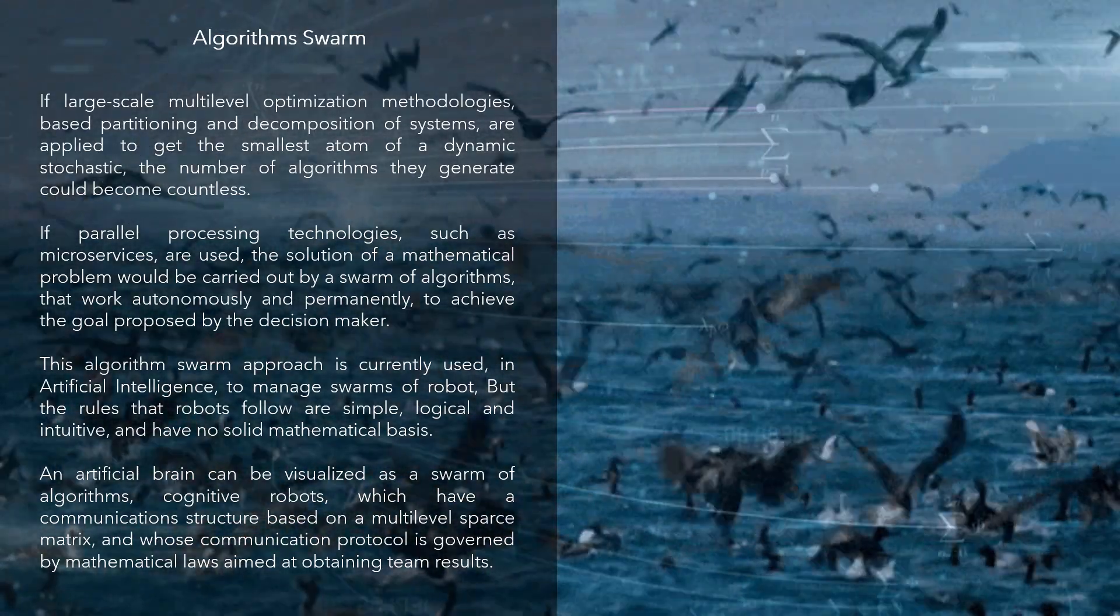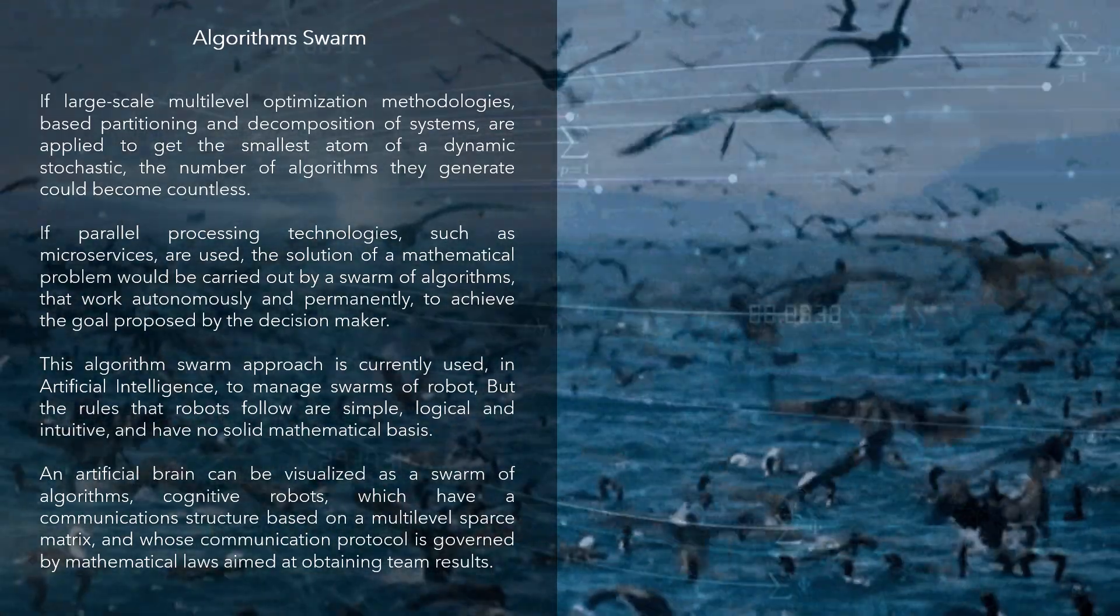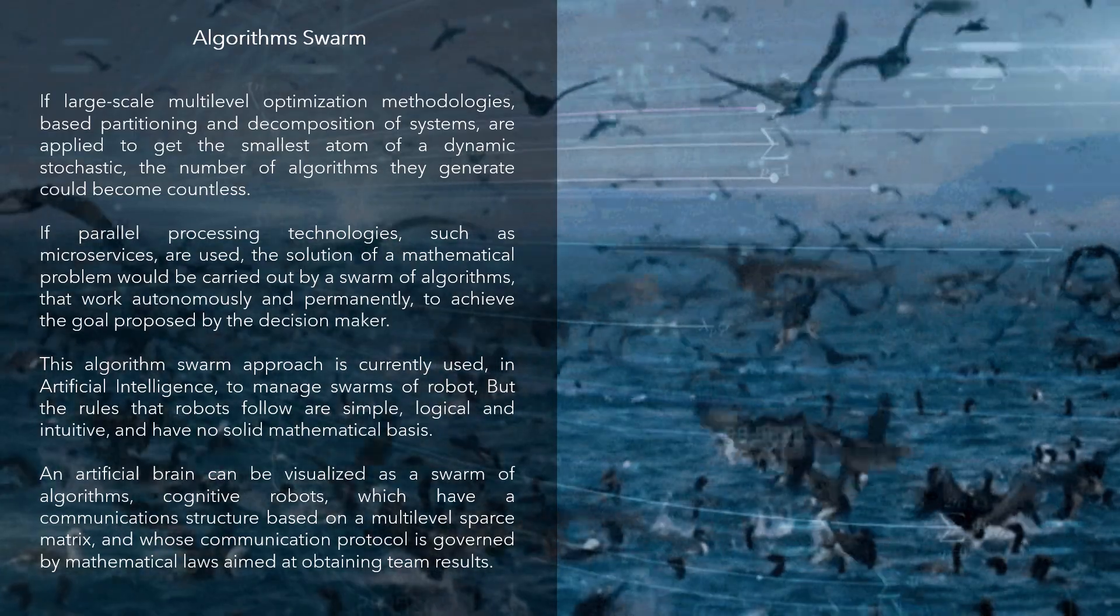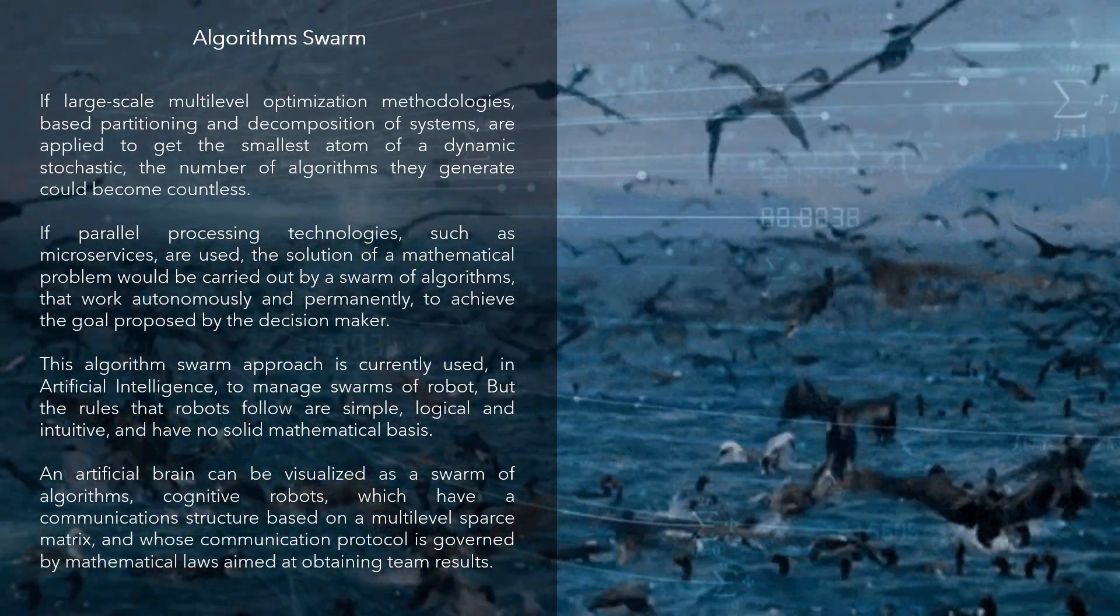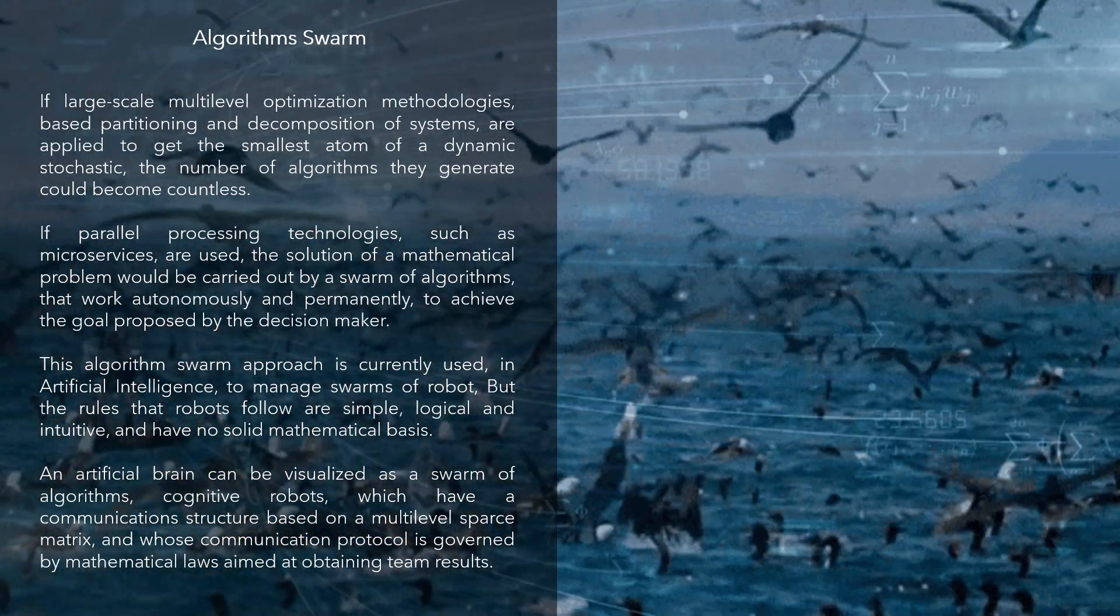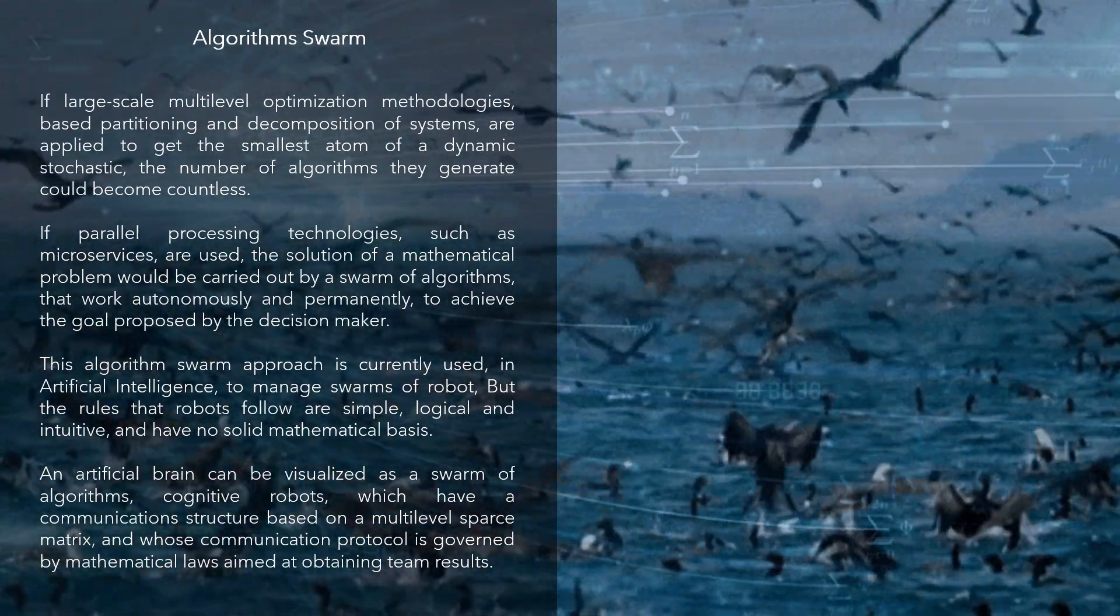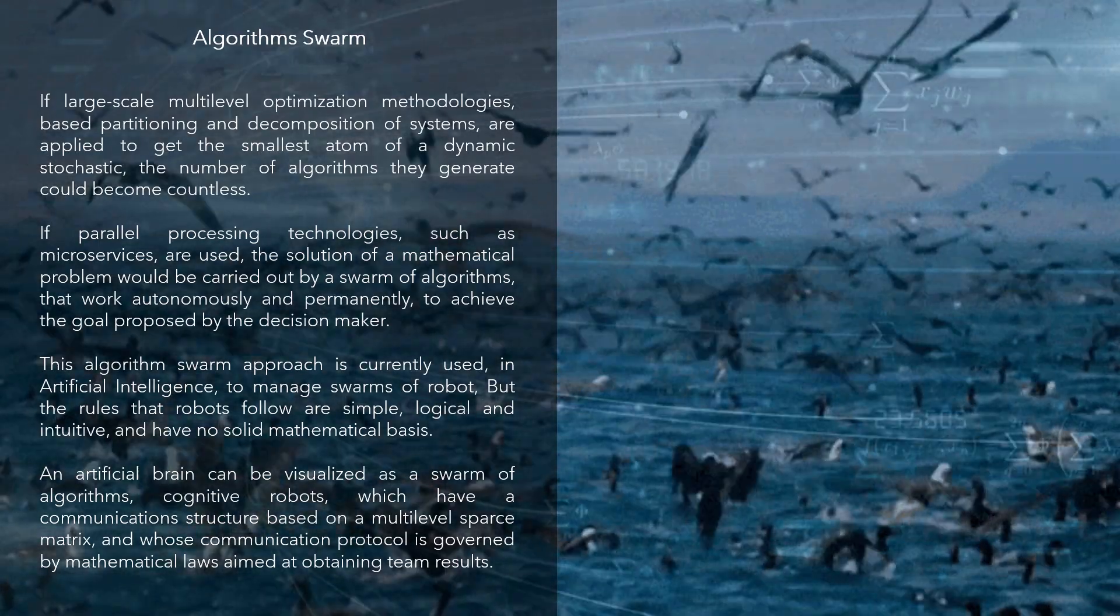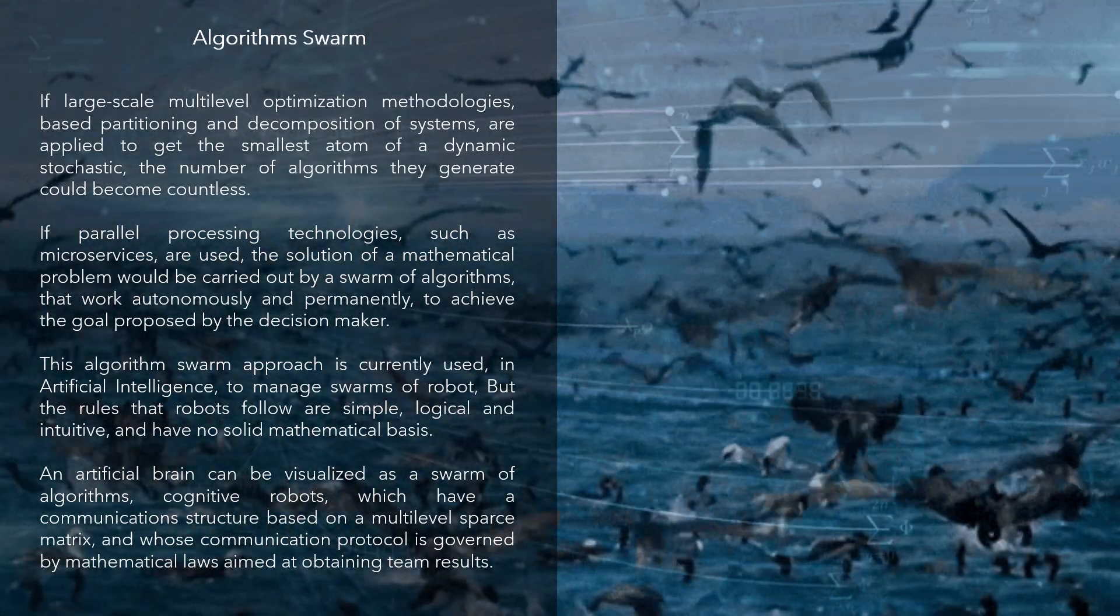the solution of a mathematical problem would be carried out by a swarm of algorithms that work autonomously and permanently to achieve the goal proposed by the decision-maker. This algorithm swarm approach is currently used in artificial intelligence to manage swarms of robots, but the rules that robots follow are simple, logical, and intuitive, and have no solid mathematical basis.